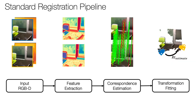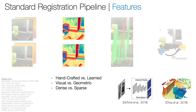Let's first consider the standard registration pipeline. This consists of three stages: feature extraction, correspondence estimation, and transformation fitting. First, features are extracted from each view. While early work used handcrafted features like SIFT and spin images, recent approaches use stronger learned features like SuperPoint and FCGF.